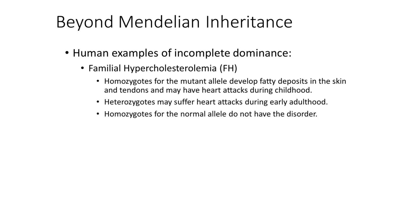An example of incomplete dominance in humans is familial hypercholesterolemia, or FH. Heterozygotes for the mutant allele develop fatty deposits in the skin and tendons, which can trigger heart attacks in childhood, though they may survive into adulthood — an intermediate level of the disorder. Homozygotes have no disorder at all, so instead of simply having it or not, you have this intermediate where you're affected but may live a bit longer.